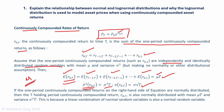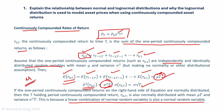If the one-period continuously compounded returns are normally distributed, then their sum — the t-period continuously compounded return — will also be normally distributed with mean mu times t and variance sigma squared times t. This is because a linear combination of normal random variables is also a normal random variable.